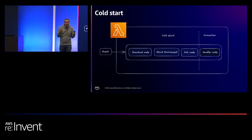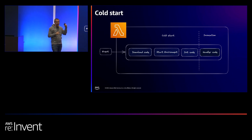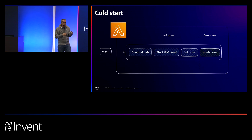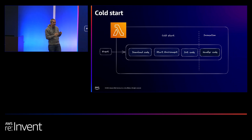Then Lambda needs to start the environment — it's a Firecracker VM under the hood, so AWS needs to start that. Finally, there is the initialization code that AWS runs for you. Your Lambda function contains two parts: the initialization code and the handler function. The handler runs for each invocation, but if you want to connect to a database or initialize S3 clients, you defer that to the init phase. So three steps: download the code, initialize the environment, run initialization code.